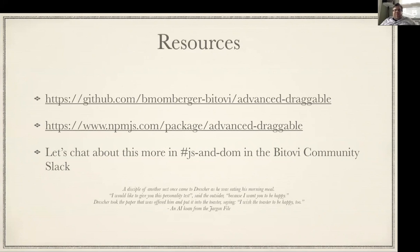If you go to GitHub, this repository already exists — it's called advanced-draggable. It has no external dependencies, it's pure JS and DOM, and it's published on NPM at version one. We can talk about this more at any time — I'm around. Go to the Bitovey community Slack, join the channel JS and DOM. And I'd like to leave you with this little koan from the jargon file: 'A disciple of another sect once came to Drescher as he was eating his morning meal. I would like to give you this personality test, said the outsider, because I want you to be happy. Drescher took the paper that was offered him and put it into the toaster saying, I wish the toaster to be happy too.' And that's my talk.